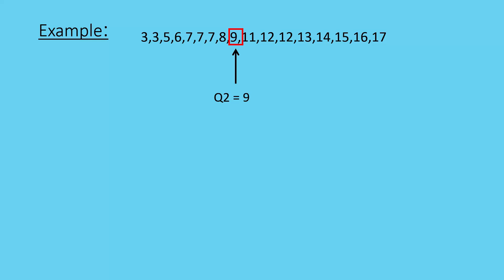Alright, this is quartile 2 and it divides our data in half. So 50% of the data is below 9 and 50% of the data is above 9 at this point.